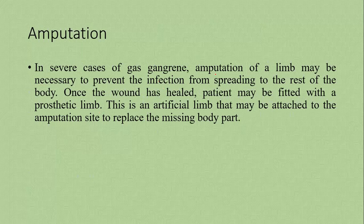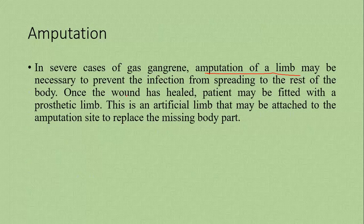In severe cases of gas gangrene, amputation may be necessary to prevent the infection from spreading to the rest of the body. An artificial limb may be attached to the amputation site to replace the missing body part.